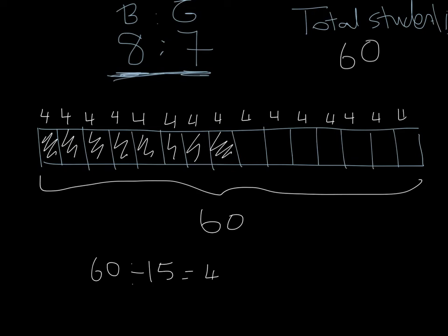Now we can answer any questions we like. So for example, how many students were boys? We can say 1, 2, 3, 4, 5, 6, 7, 8 groups of 4 which is 32. So we know there's going to be 32 boys.